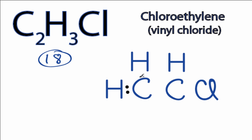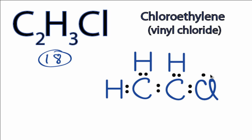We'll put two valence electrons between atoms to form chemical bonds. We've used 10, and then we'll go around the chlorine: 12, 14, 16, and back to the central carbons, 18.